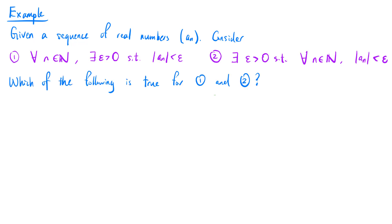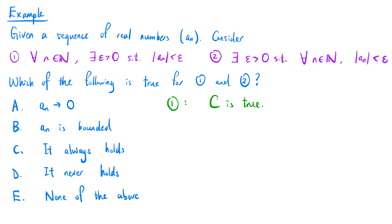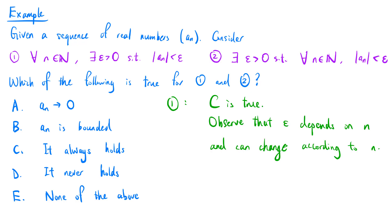Let's determine which of the following is true for these two statements. For the first statement, the answer is c — it always holds, because the fact that epsilon comes after n implies that epsilon depends on n and can change according to n. So if we are given a natural number n, we can take epsilon to be the absolute value of an plus 1, so that it is always greater than the absolute value of an.